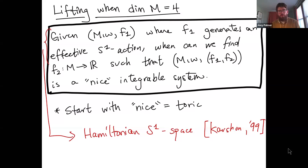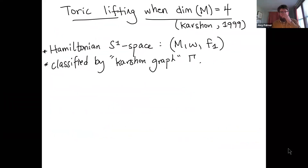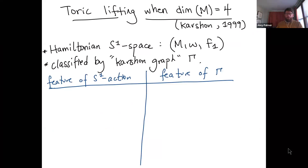Hamiltonian S^1 spaces were introduced by Karshon in her 1999 memoirs paper, where they were classified. The first question is: when the word 'nice' means toric — given a Hamiltonian S^1 space, when can you lift it to a toric integrable system on a four-manifold? This also appears in that same 1999 paper.